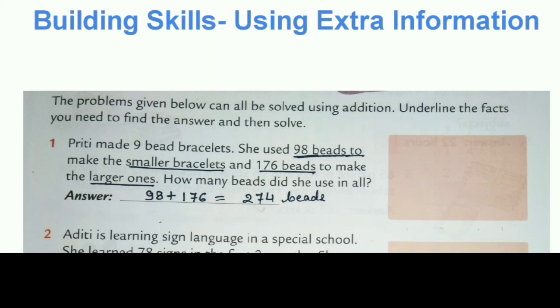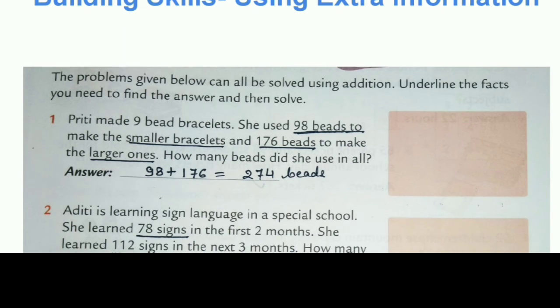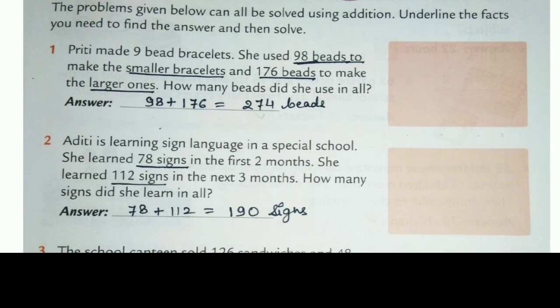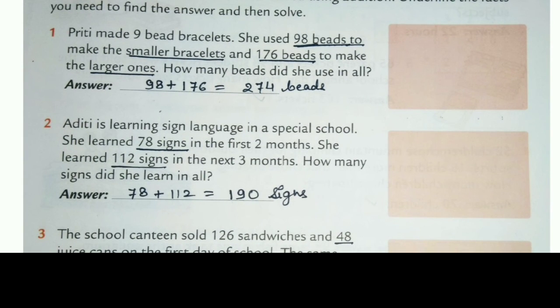Next, building skills, using extra information. This is not any exercise. Here we will get some extra information. See, these are the word problem questions. In this one we have to underline the fact you need to find the answer and then solve. So here we will underline which fact we want. See, in this one Preeti made 9 bead bracelets. She used 98 beads to make the small bracelet and 176 beads to make the larger one. How many beads? It means in this question, the question is asking about beads. So how many beads she has used in all? So 98 beads and 176 beads will come to 274 beads.